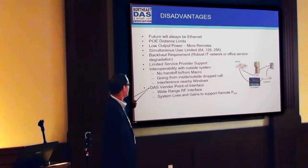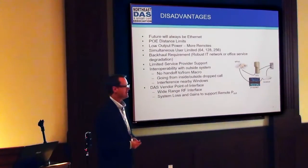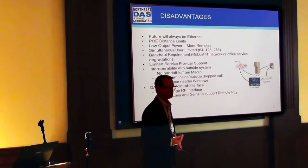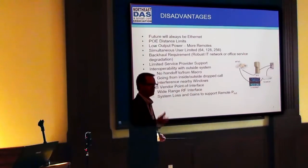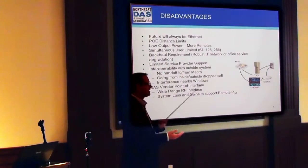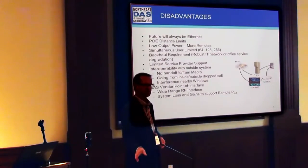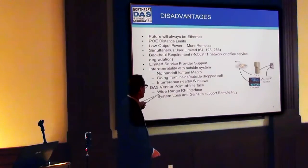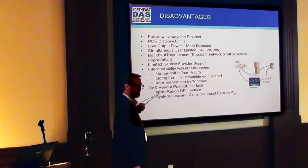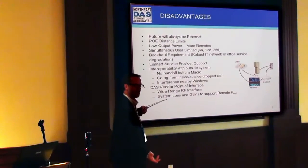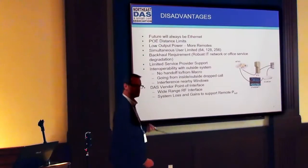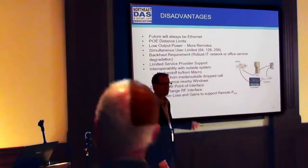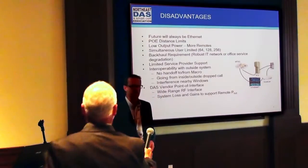There's interference on nearby windows where the macro is penetrating the window and competing with the system inside. Your DAS vendor point of interface — in our system you go from 0 to 48 dBm, and others have either a high power or low power card. Wide-range RF interface is key for interoperability between the two systems. You've got to look at gains and losses in order to support your full power at your remote.